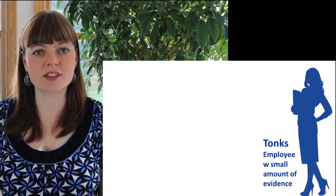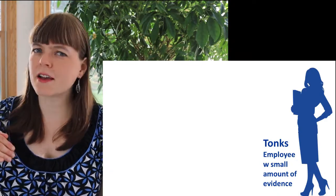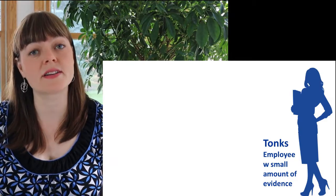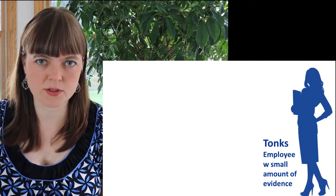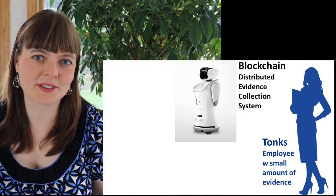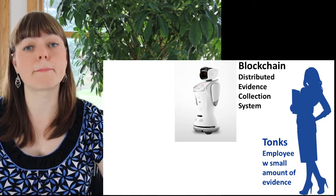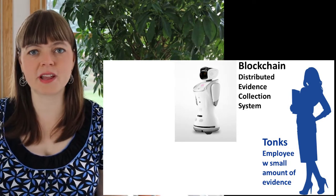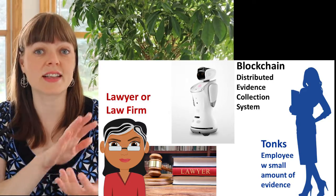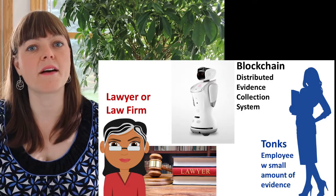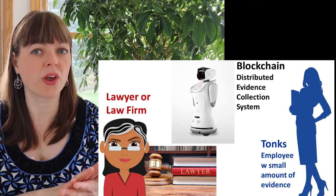To describe this in more detail, I'm going to tell a story with three characters. One is Tonks, an employee within an organization who has a few suspicious emails and even recorded a conversation and wrote up notes about a meeting she had ethical questions about. The second player is the blockchain, which I represent using a robot — it's basically taking in evidence, providing a timestamp, and making that permanent and immutable. The third player is a lawyer. We'll imagine this blockchain has a phone app that anyone in the United States can download, with a way of verifying that Tonks is actually an employee of the organization.